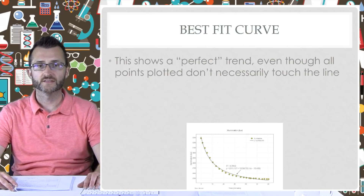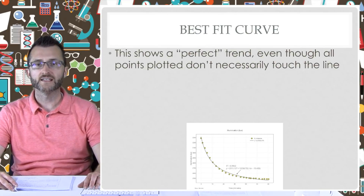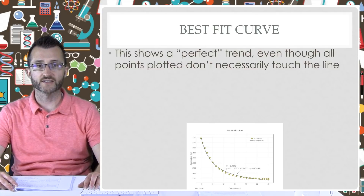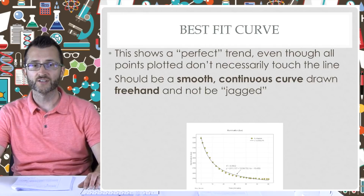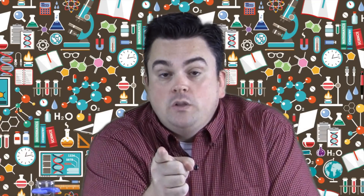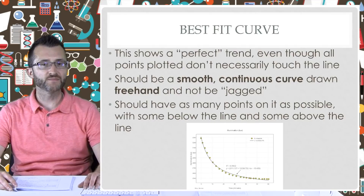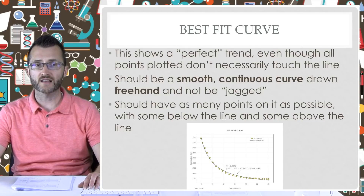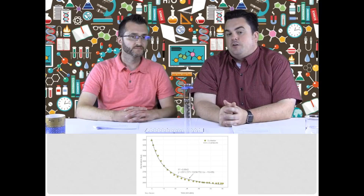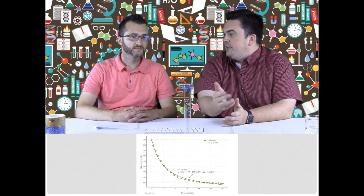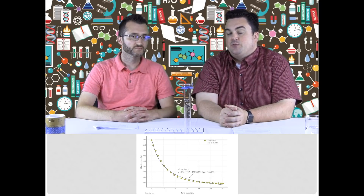Best fit curve: this shows a perfect trend, even though all points plotted don't necessarily touch the line. Should be a smooth, continuous curve drawn freehand and not be jagged. Don't lift the pencil. Should have as many points on it as possible, with some below the line and some above the line. This example here is pretty good data, so it kind of looks like the line is touching all the dots, but it's really not.